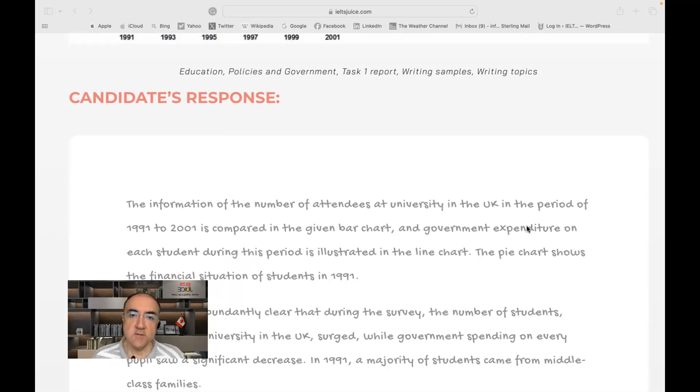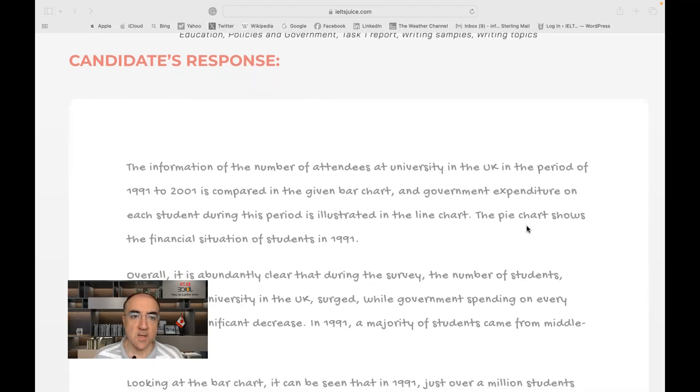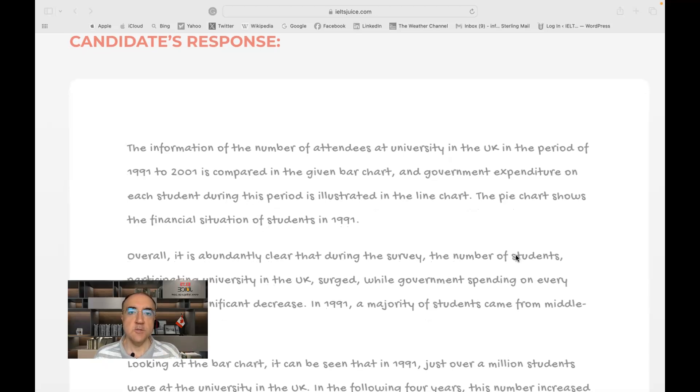The information on the number of attendees at university in the UK in the period of 1991 to 2001 is compared in the given bar chart. One thing to note is that as long as we are presenting the data we can use present simple. So although the information here goes back to 1991 and until 2001 which is all past, as long as we are presenting the data present simple tense is fine. And government expenditure on each student during this period is illustrated in the line chart. The pie chart shows the financial situation of students in 1991. So it's a very good introduction. It covers and introduces the task to us so it covers all the three visuals.